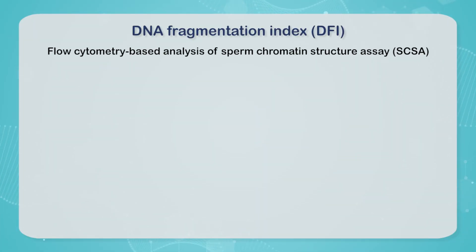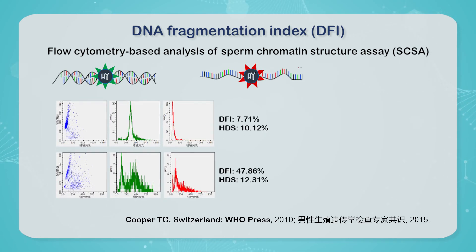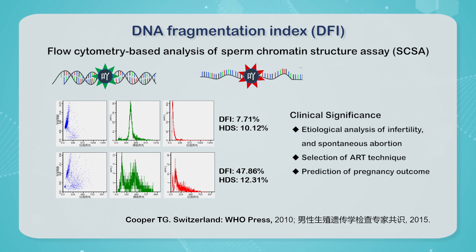Sperm DNA fragmentation index assay by flow cytometry is the most accurate, rapid, and fully reproducible method. It is recommended by expert consensus and WHO standards for male reproductive genetics testing. The normal sperm DNA is tightly bound and acid-resistant, maintaining the stability of the double strand. However, damaged or immature sperm has loose chromatin, and its DNA becomes single-stranded under acid action. Acridine orange appears green when associated with normal DNA and becomes red when associated with damaged single-stranded DNA, allowing the percentage of sperm with DNA damage to be calculated. When the DFI is greater than 30%, it suggests sub-fertile potential.